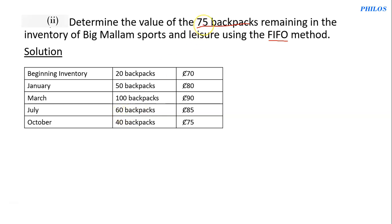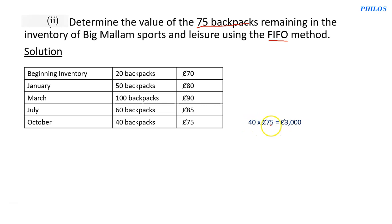When you take 40 out of 75, you're left with 35, and 35 of the July ones are also included. To solve this: since all 40 backpacks from October are part of the 75 that remain, you take 40 times 75, which gives 3,000.